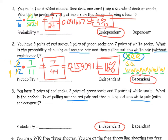Let's take a closer look. Drawing a picture: 3 red pairs, 2 green pairs, and 7 white pairs — 12 total. The probability of pulling out a red pair is 3 out of 12.